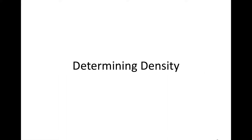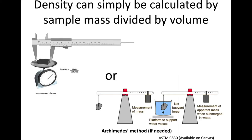The first one maybe sounds simple, but I do want to look over how we determine density and also some aspects related to it. Density is really simple — we take the sample mass and divide by volume. If it has a very uniform shape, we can calculate the volume from the dimensions and it's straightforward to get that number. If we have a unique shape, it may not be easy to calculate volume, so there are other methods.